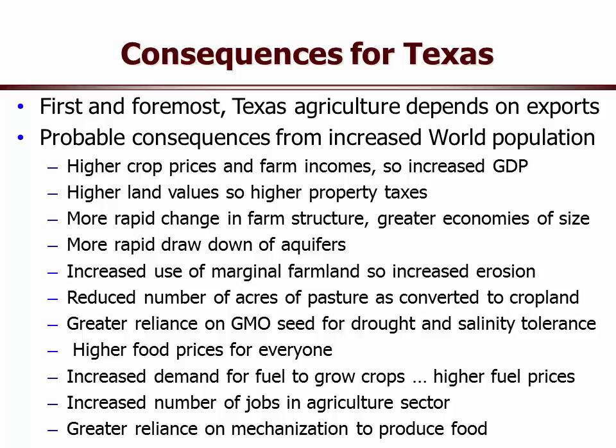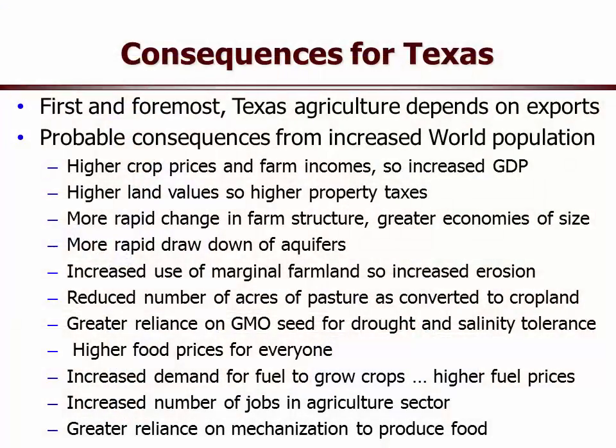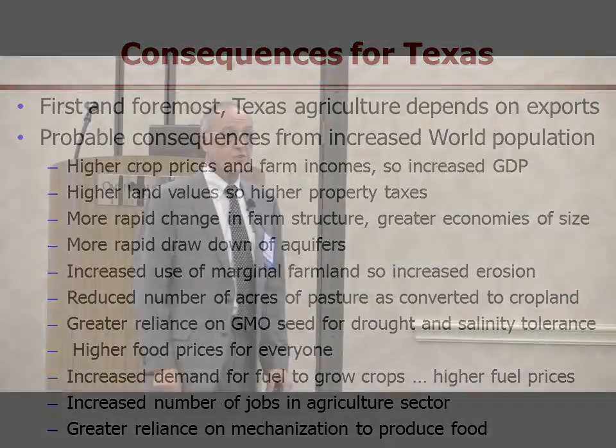Greater reliance on GMO seeds, definitely. Drought-tolerant GMO crops would be very valuable — wheat would love to have a drought-tolerant variety since two-thirds of it is grown dryland. We're going to see higher food prices for everyone. Hopefully our incomes go up so we don't drop in living standard. There'll be increased demand for fuel to grow crops — upward pressure on fuel prices — and an increased number of jobs in the agriculture sector, with greater reliance on mechanization, larger equipment, and less manual labor.